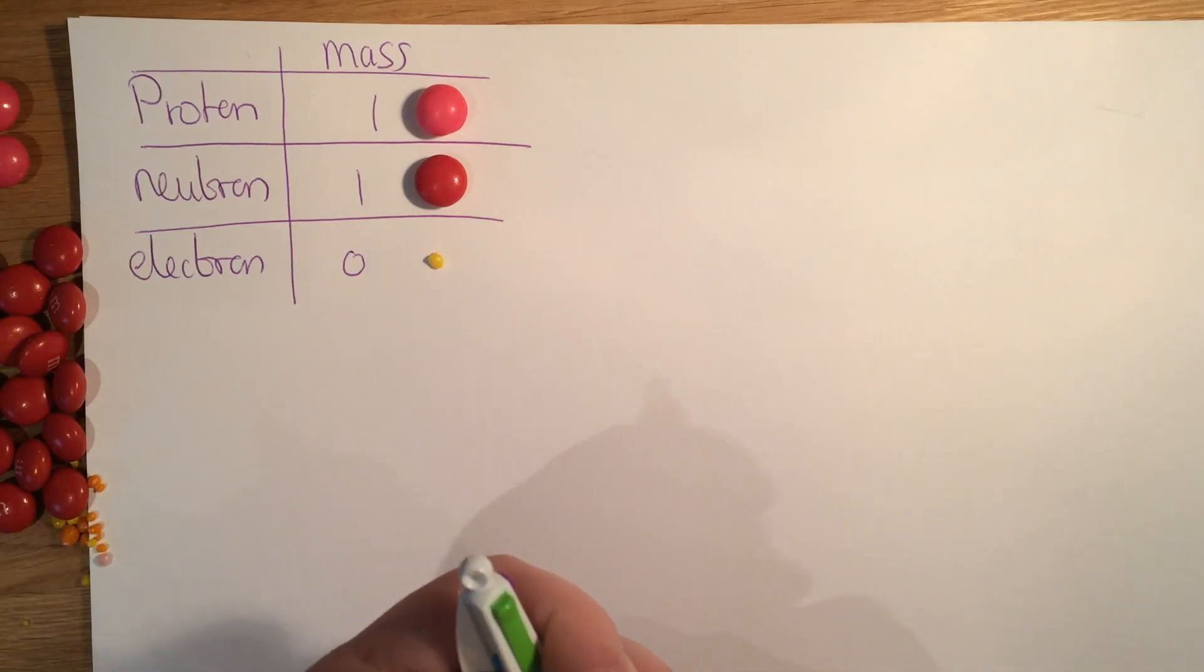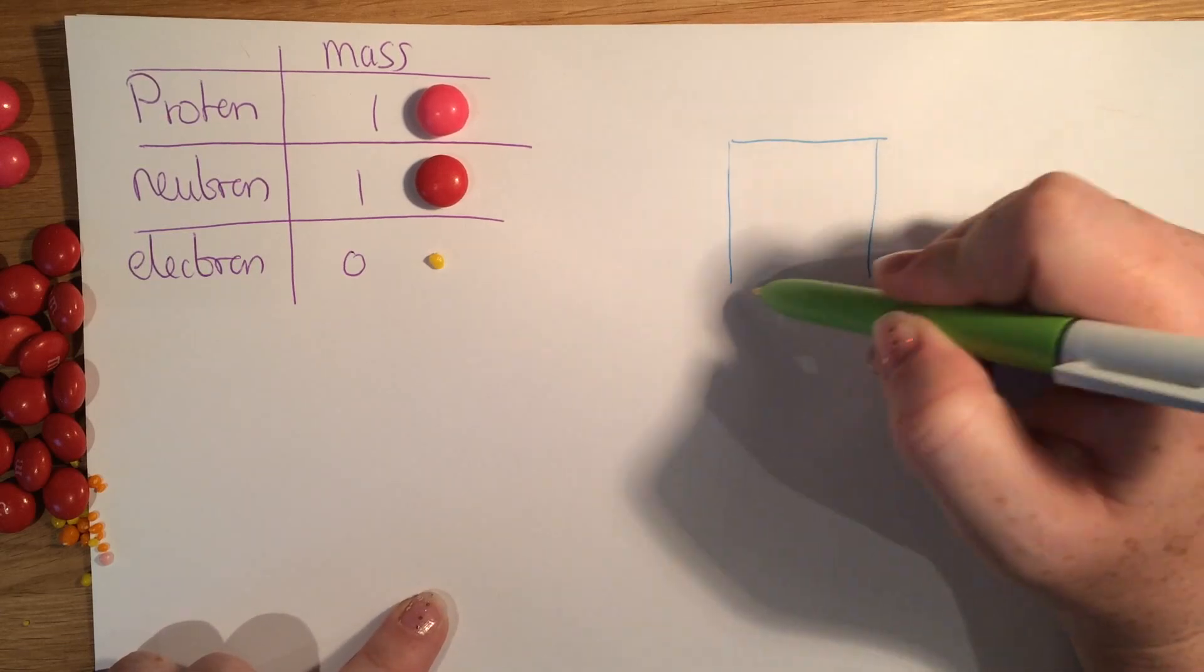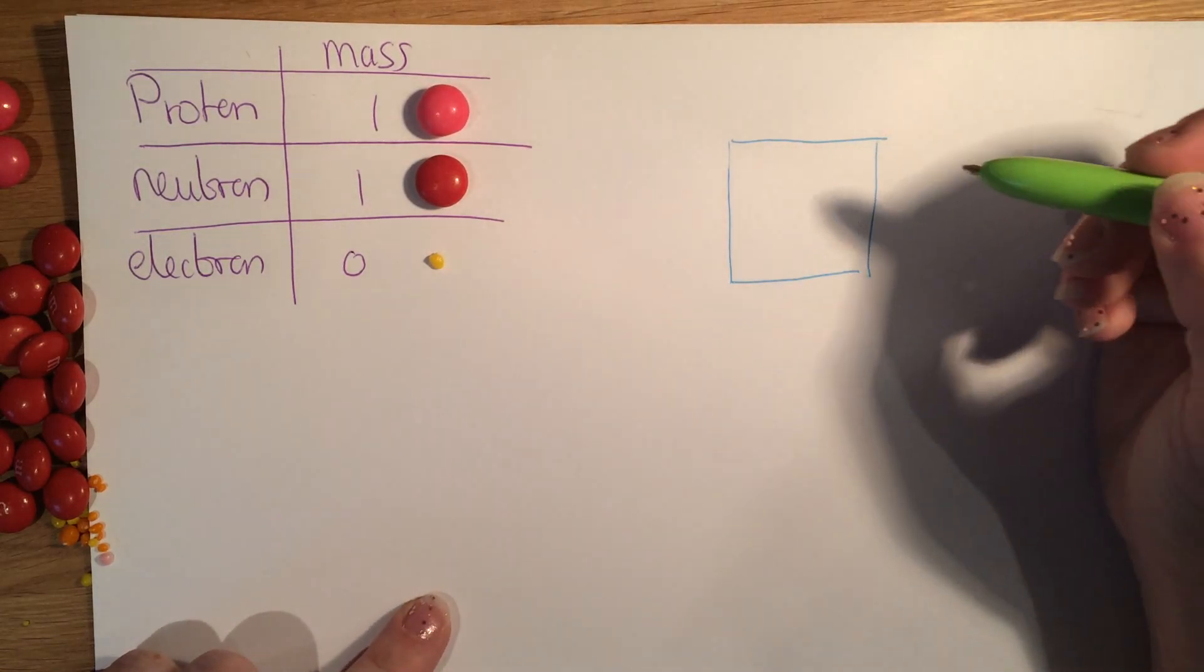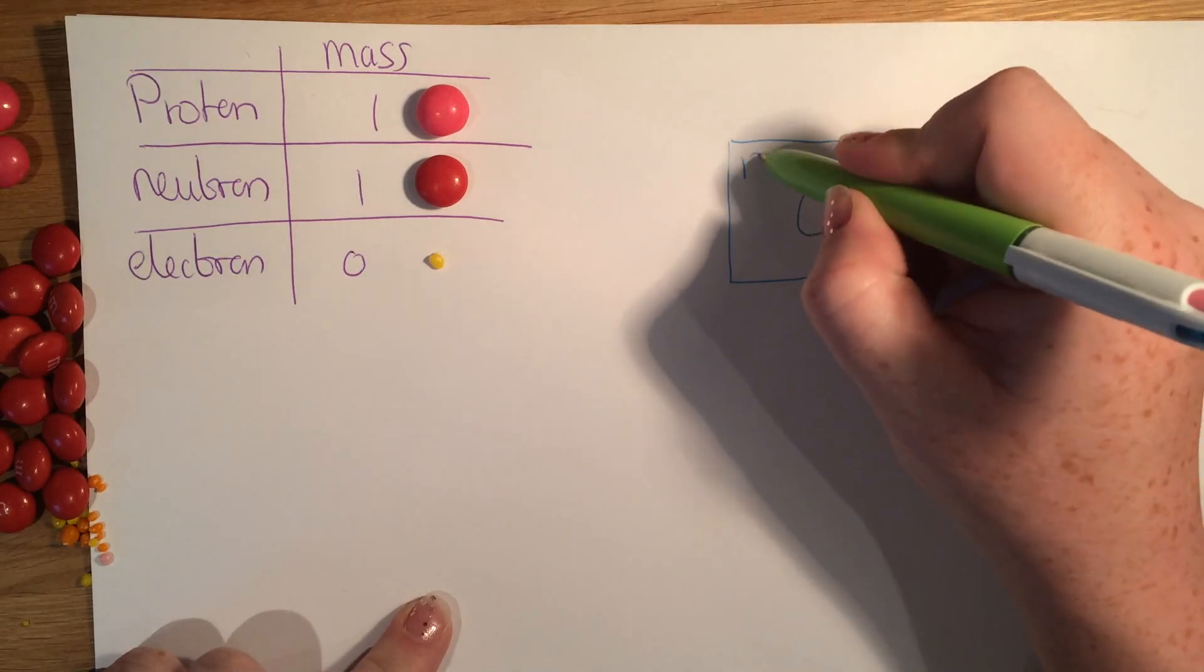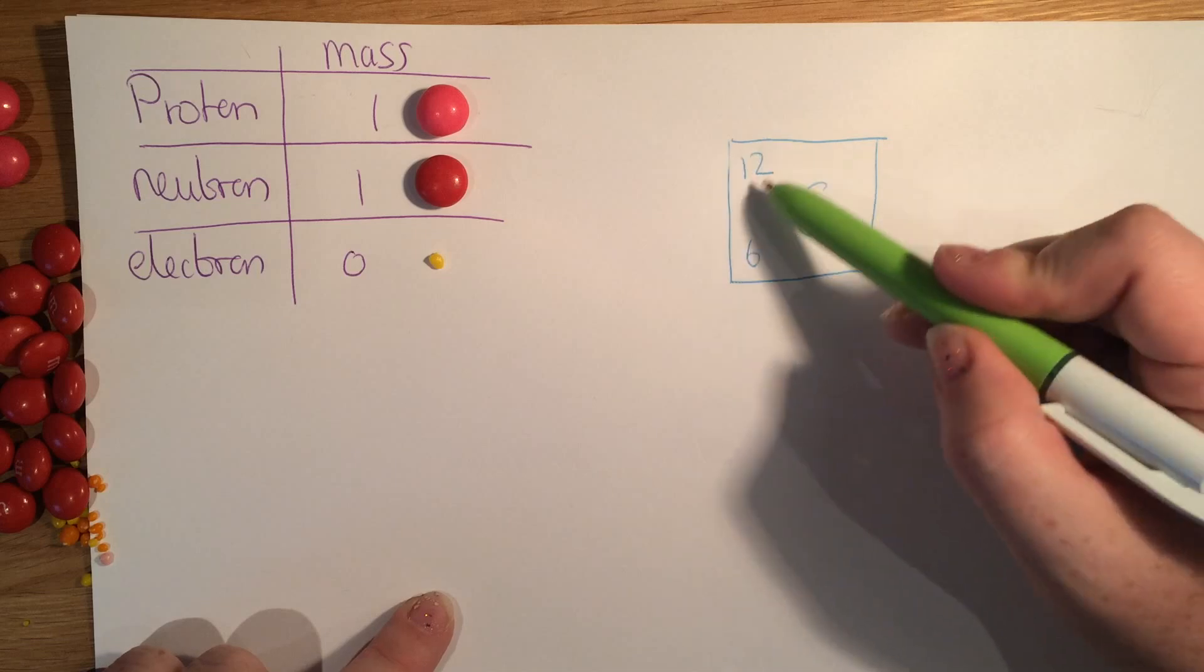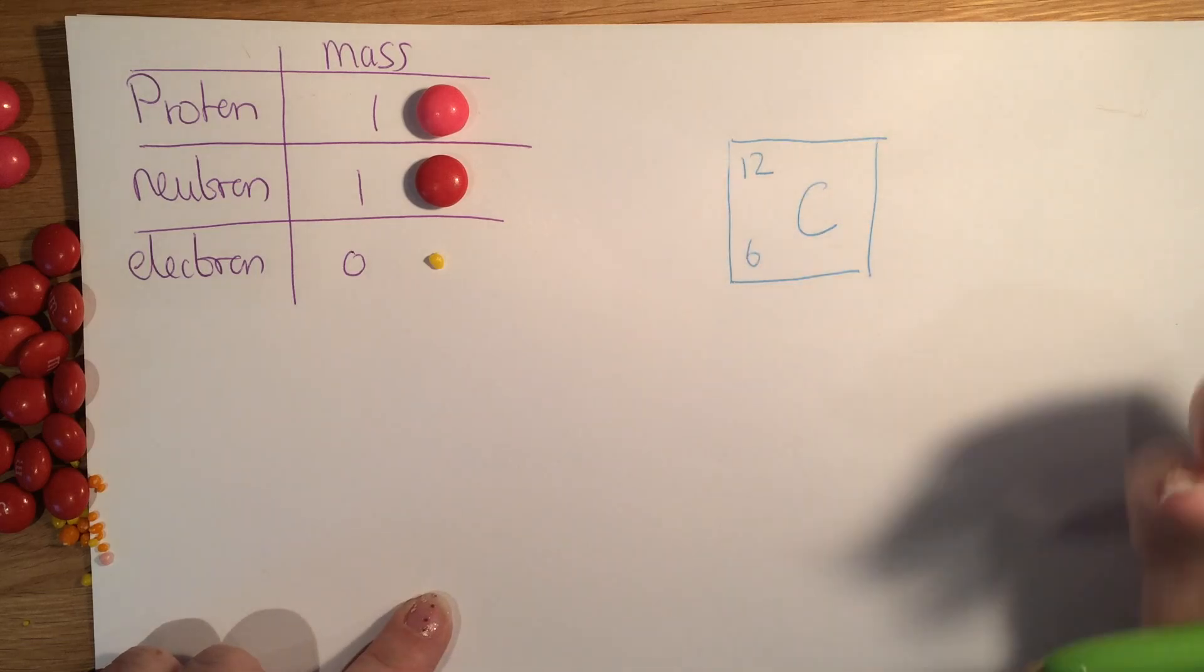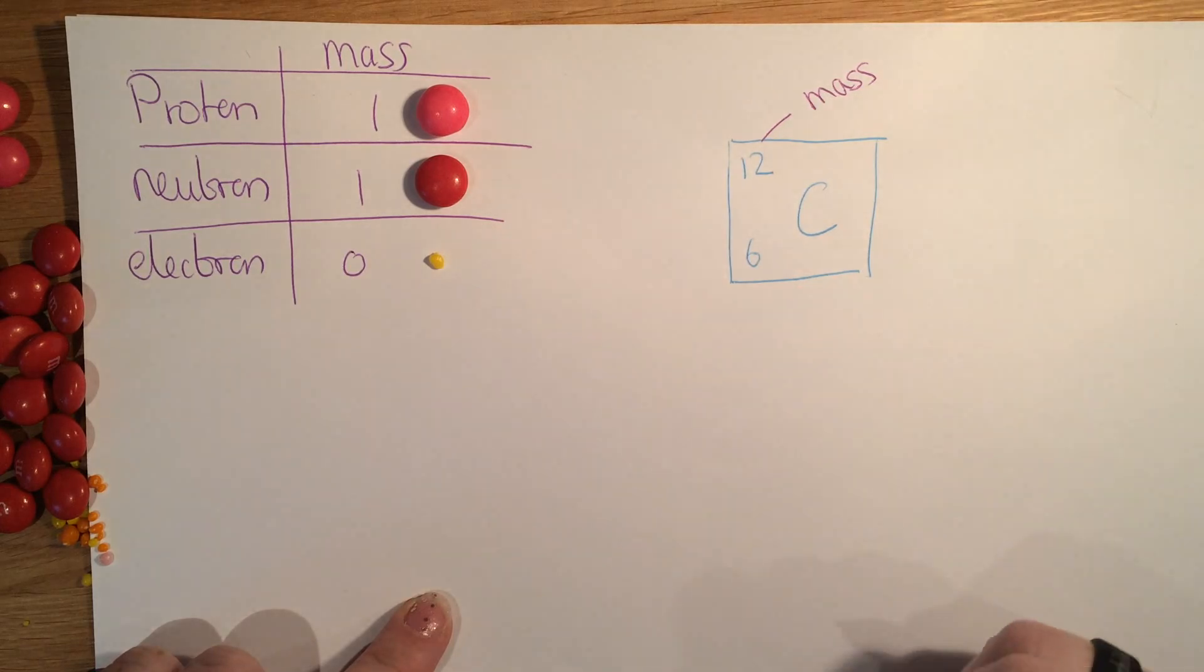So on your periodic table you are going to see boxes. You're gonna see boxes like this. You are going to see a symbol in the box. We're gonna start with carbon. And then you're gonna see two numbers that look like this: a big number at the top and a little number at the bottom. The big number at the top is the mass number.